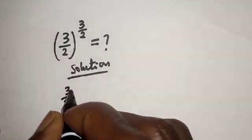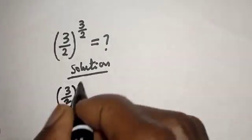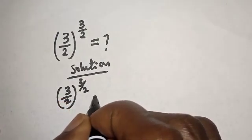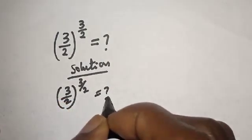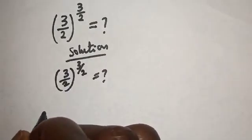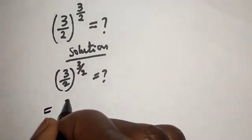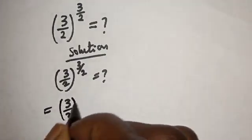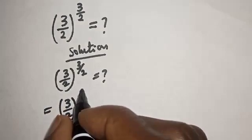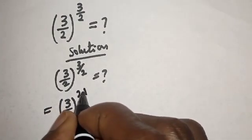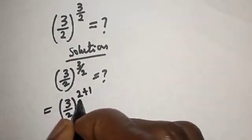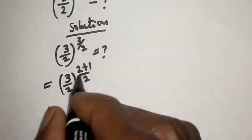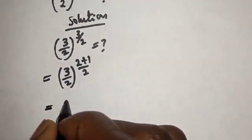Three over two to the power of three over two is unknown. Let's see — this is equal to three over two to the power of three over two, which can be written as two plus one over two. Let's split this.